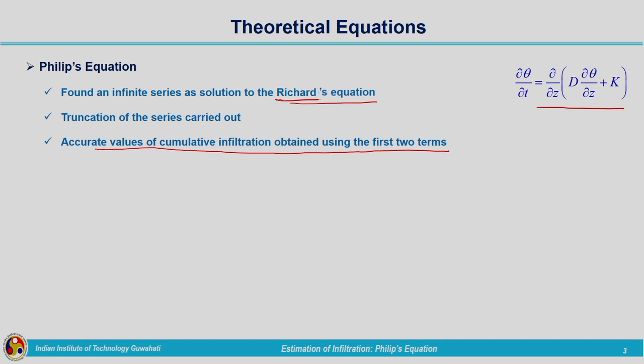By considering the first two terms of the series it was found that it is giving a very accurate solution. In the Phillips equation the assumption is K and D are functions of theta. In Horton's equation it is assumed to be constant — we have just seen the importance of the equation and the parameters while discussing Horton's equation. In Phillips equation K and D are considered as functions of theta.